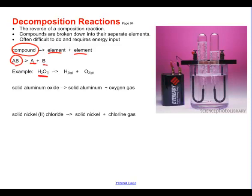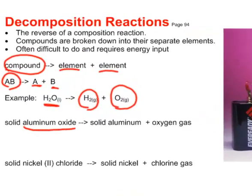Water is a compound that we're very familiar with. It gets broken down into hydrogen gas and oxygen gas. Here's another one. A solid aluminum oxide made of aluminum and oxygen gets broken down into just aluminum and oxygen gas. Solid nickel to chloride. So here we have a combination of nickel and chlorine and it gets broken down into pure nickel and chlorine gas.